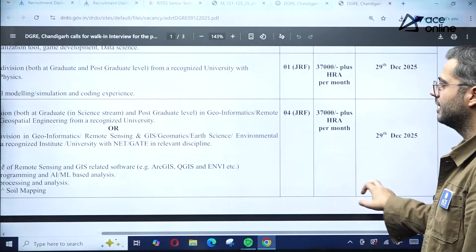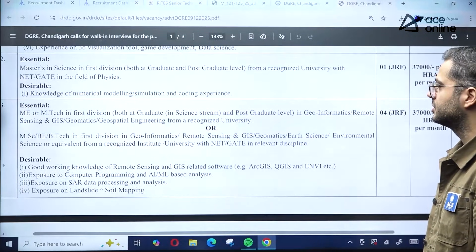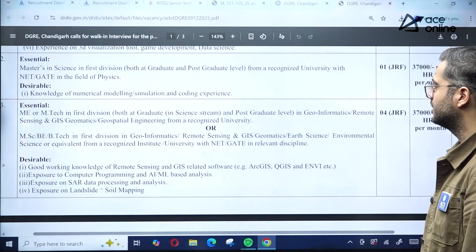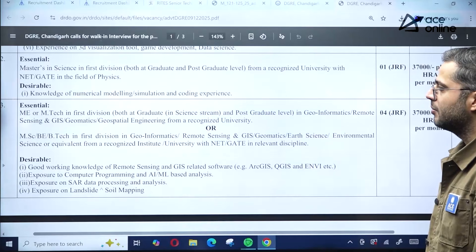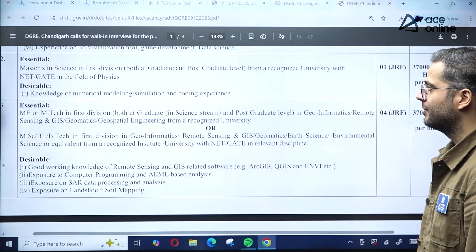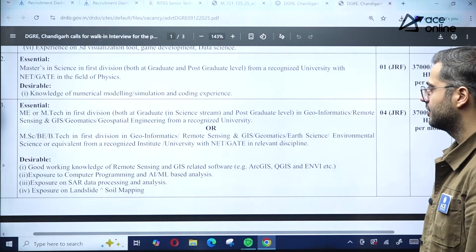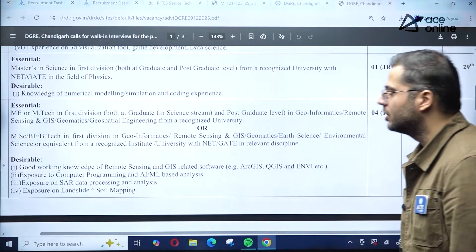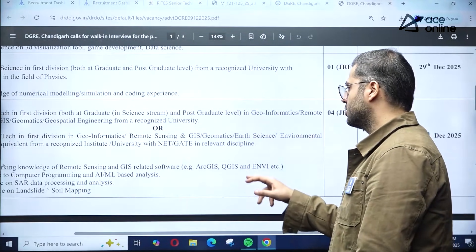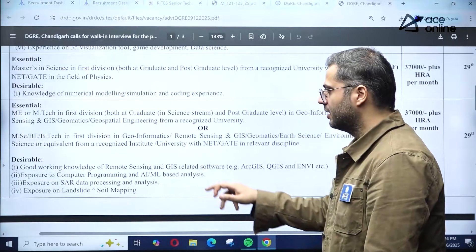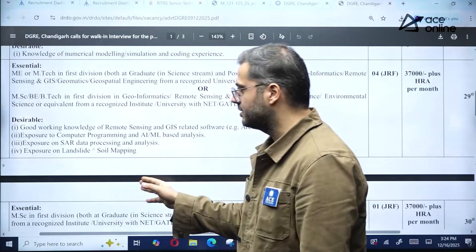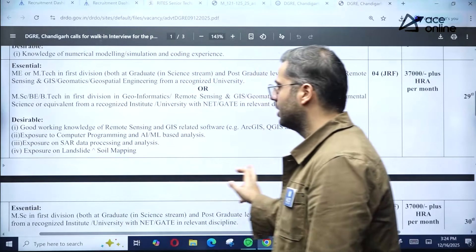M.Tech first division in science stream, both graduate and postgraduate level, in Geo-informatics, Remote Sensing, Geomatics, or Geospatial Engineering from a recognized university. MSc or B.Tech is also considered with a valid GATE scorecard. Good working knowledge of remote sensing and GIS-related software like ArcGIS, QGIS, and ENVI is required, plus exposure to computer programming, AI/ML-based analysis, SAR data processing, and landslide and soil mapping. Four JRF positions are available.